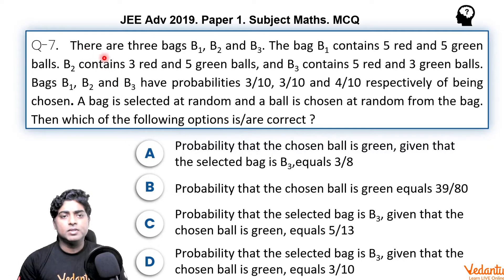Let's have a look at the problem. It says there are 3 bags, B1, B2, B3. And there are certain number of balls in these bags. Bag 1 contains 5 red, 5 green balls. Bag 2 contains 3 red, 5 green. B3 contains 5 red, 3 green balls. The bags B1, B2, B3 have probabilities 3 by 10, 3 by 10, 4 by 10 of being chosen.